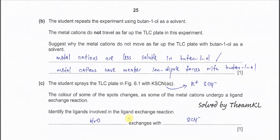Part B. The student repeats the experiment using butane-1-ol as a solvent. This is less polar compared to water, so the cation might not really interact well with this organic solvent. The metal cations do not travel as far up the TLC plate in this experiment. Suggest why metal cations do not really move as far up the TLC plate when we use butane-1-ol. It's because butane-1-ol is an organic solvent, so it's less polar. Metal cations are less soluble in butane-1-ol.